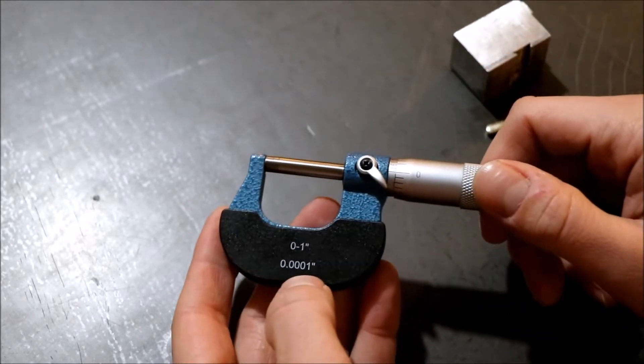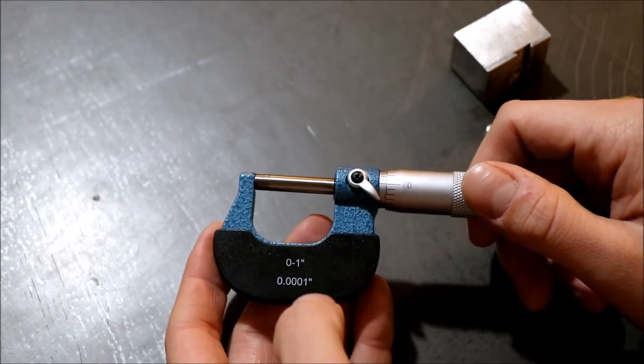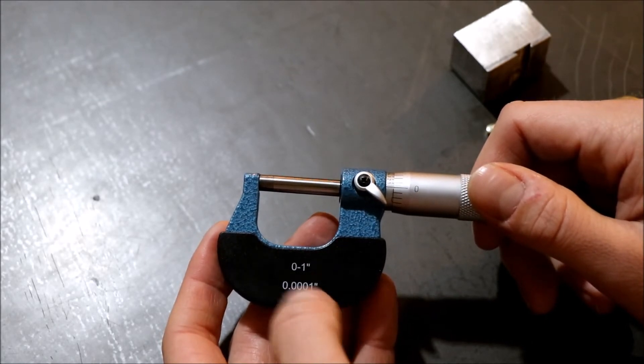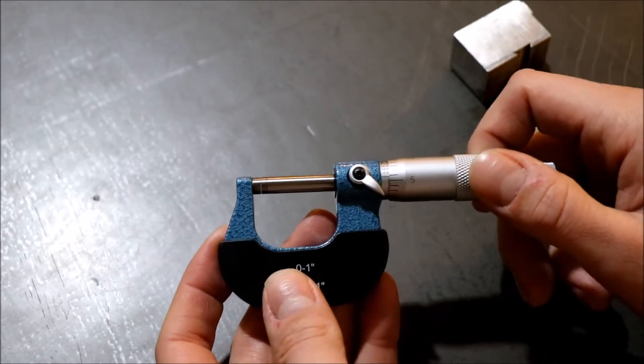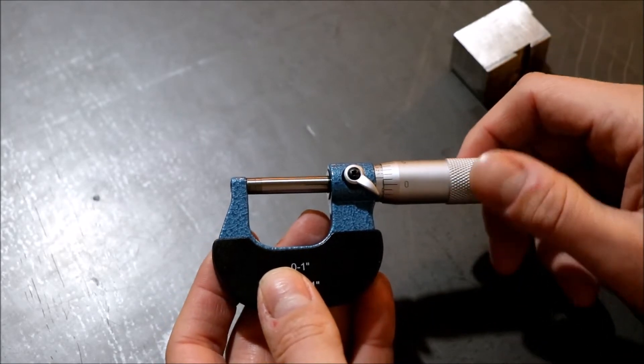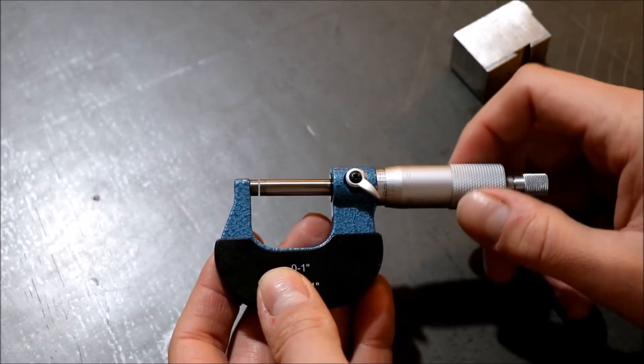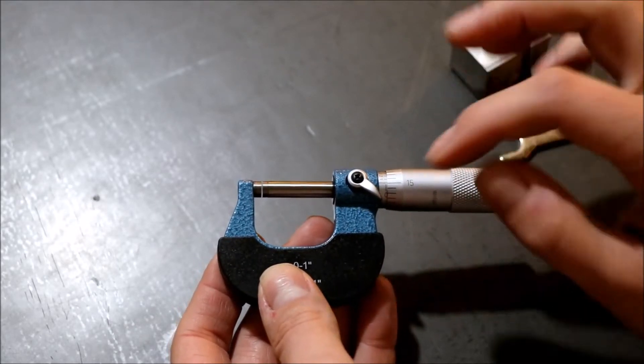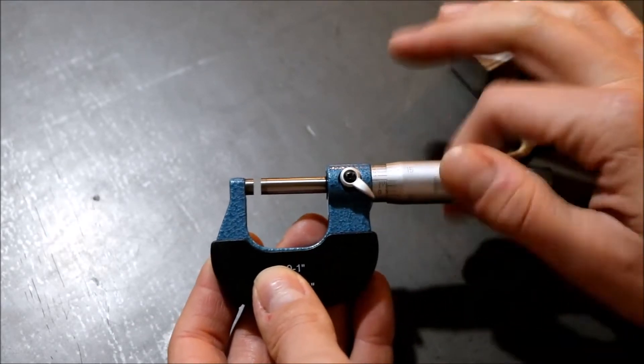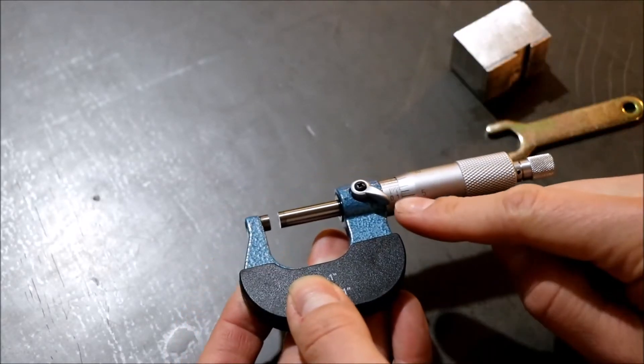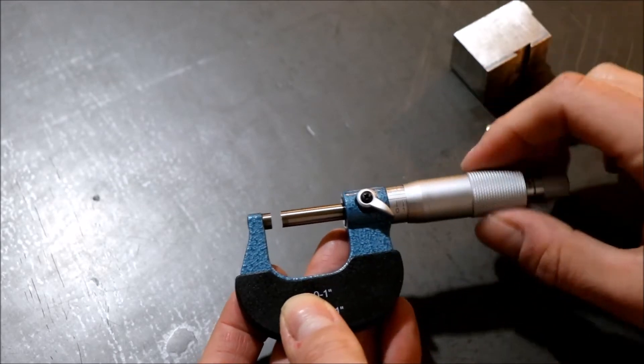So this one here is a little bit trickier than your standard micrometer because it measures all the way out to four decimal places but still really not too big a deal. The name of the game is this little line right here, your center point line, and all these little increments is what you're going to be watching.